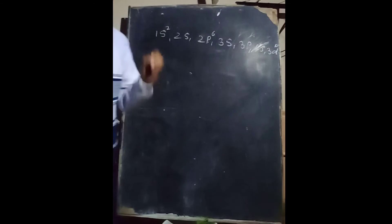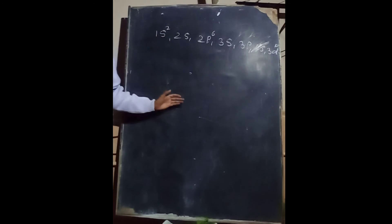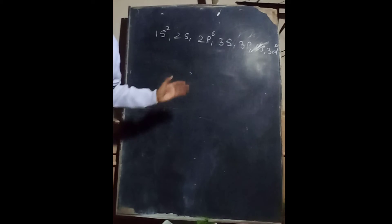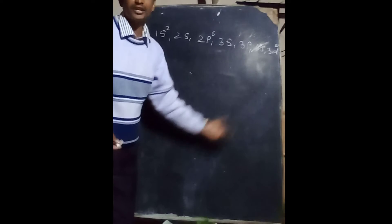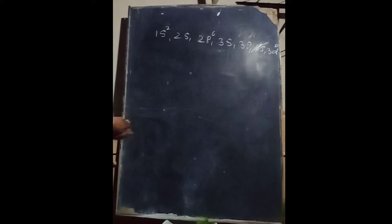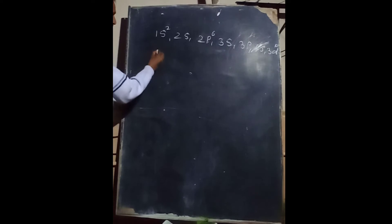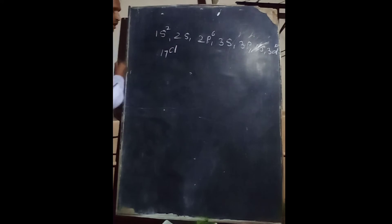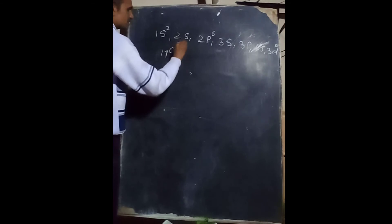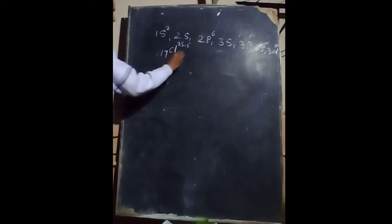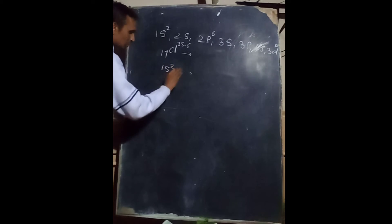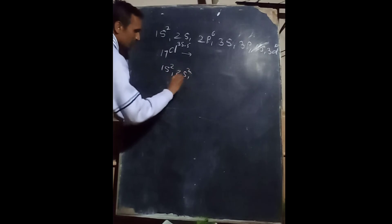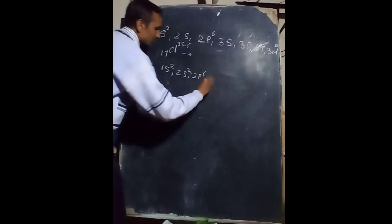Suppose we are taking an example to write the electronic configuration of any element from 1 to 118. For up to SSLC it is up to 30 elements. We are taking the example of number 17, which is chlorine. Chlorine has atomic number 17. We write it as: 1s², 2s², 2p⁶, then 3s...